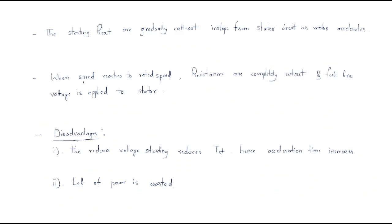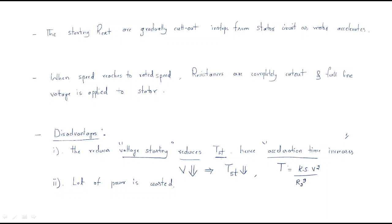This method has some disadvantages. The reduced voltage at starting reduces the starting torque, and hence the acceleration time increases. The approximate starting torque formula is: T ≈ Ks × V² / (R2² + Sx2²). Since voltage decreases, starting torque also decreases, and the motor takes more time to accelerate.